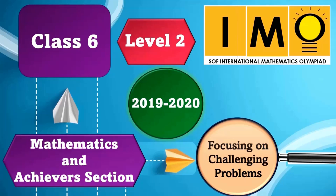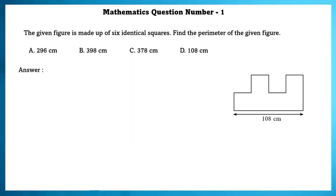Class 6 Level 2 IMO Mathematics question number 1. The given figure is made up of 6 identical squares. Find the perimeter of the given figure.